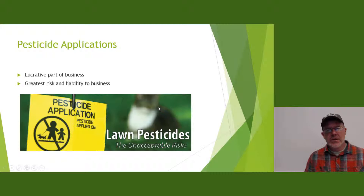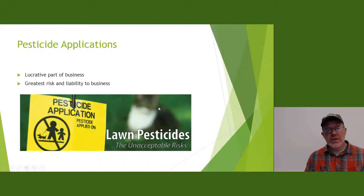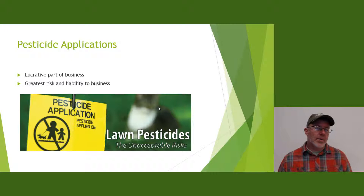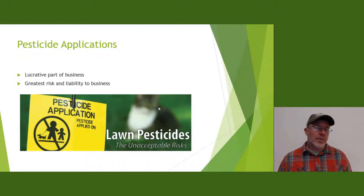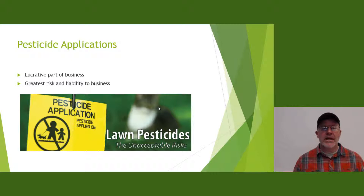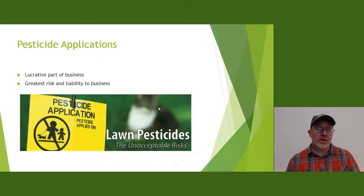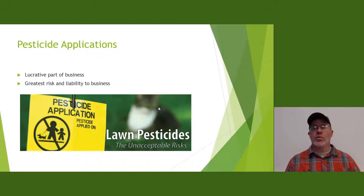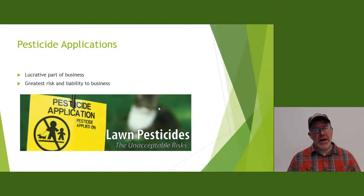Let's go ahead and get started with chapter 13, pesticide management. Pesticide applications are a very lucrative part of any type of landscape business. You can make good money putting out fertilizer and spraying chemicals in people's turfgrass and shrub beds — tree and shrub care, lawn care, very good money in it. However, it is not only lucrative, it is a great risk. You can get in some trouble applying pesticides, especially when applying them incorrectly at the wrong rate or spraying the wrong chemical on the turf. It does have great risk and liability to your business.